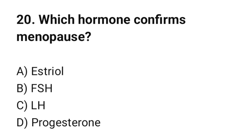Question number 20. Which hormone confirms menopause? The correct option is B: FSH.